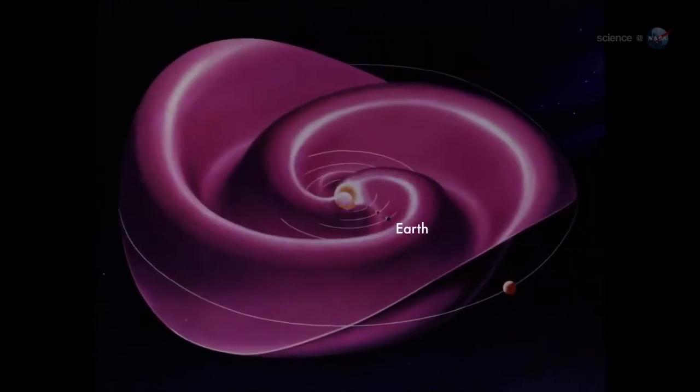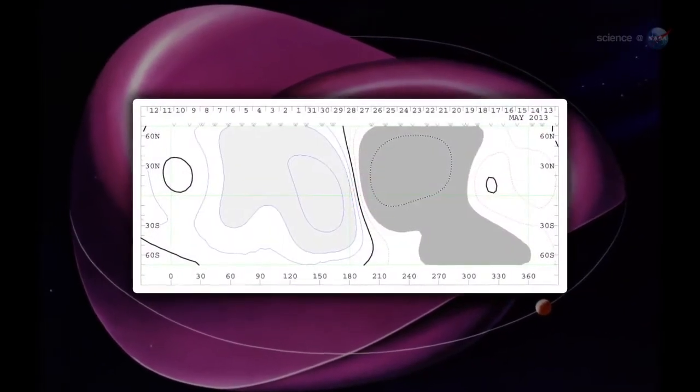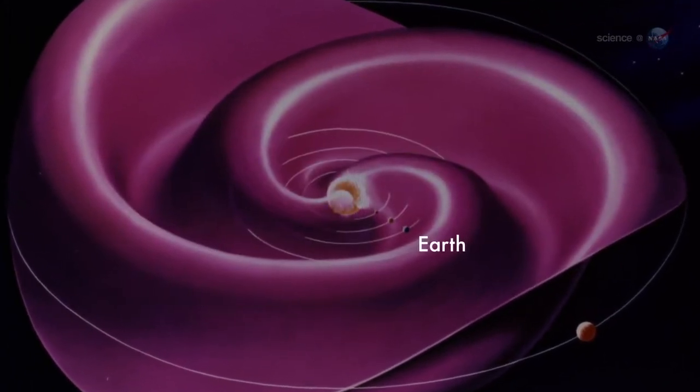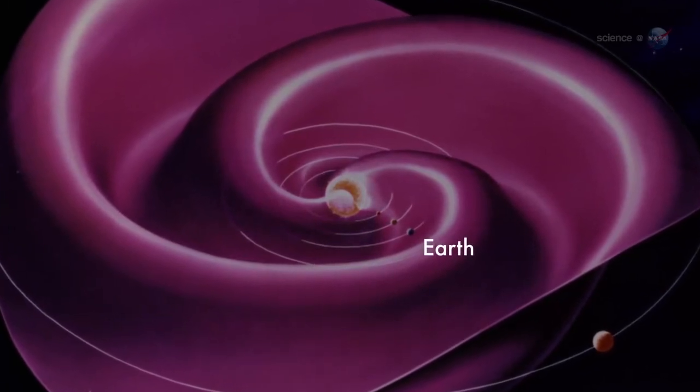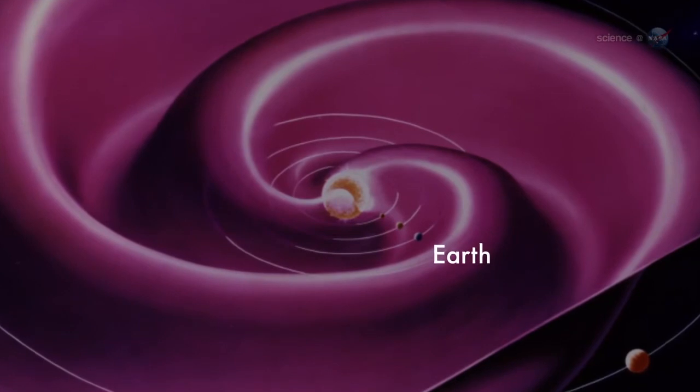During field reversals, the current sheet becomes very wavy. Shearer likens the undulations to the seams on a baseball. As Earth orbits the Sun, we dip in and out of the current sheet. Transitions from one side to another can stir up stormy space weather around our planet.